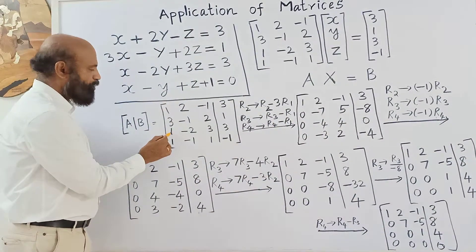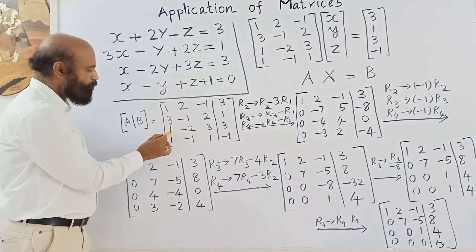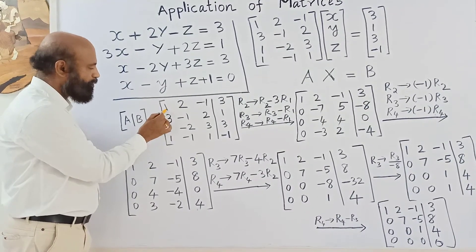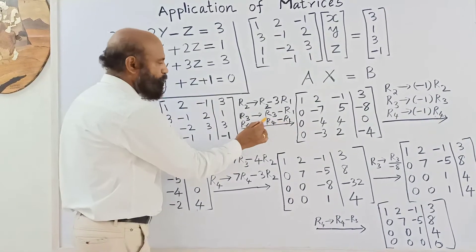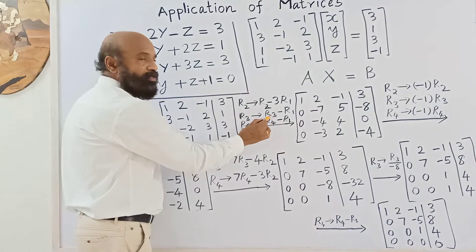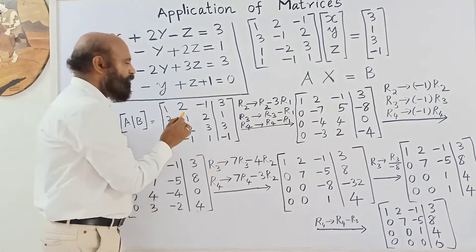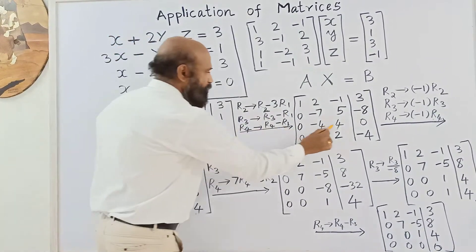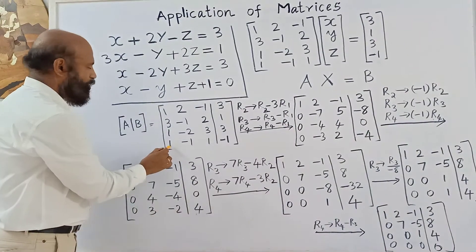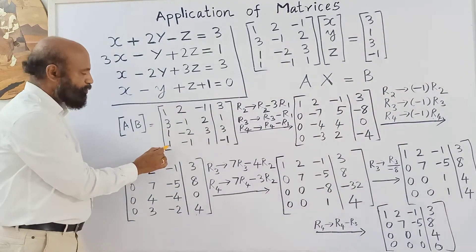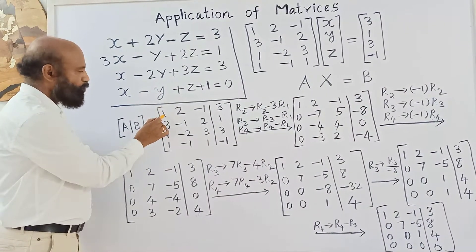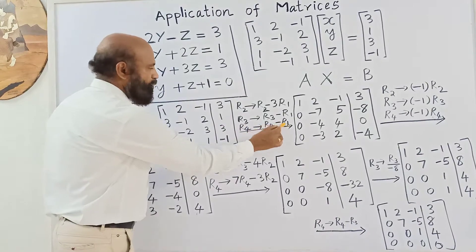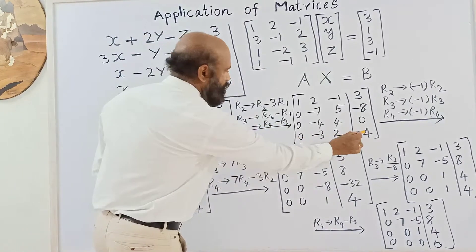Similarly, for the third row, since the entry is 1, we subtract the first row from the third row to get zero. For the fourth row, since that entry is also 1, we subtract the first row from the fourth row to get zero in that position as well.